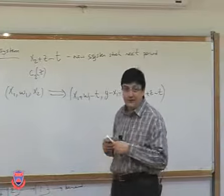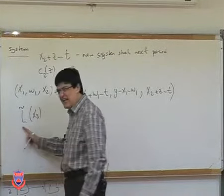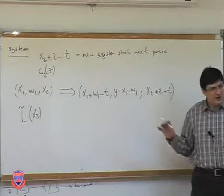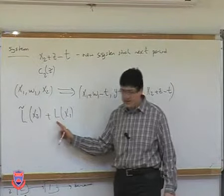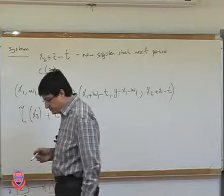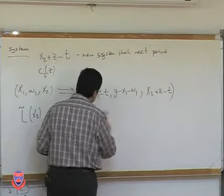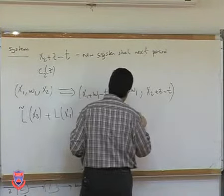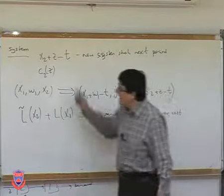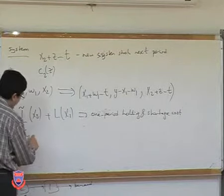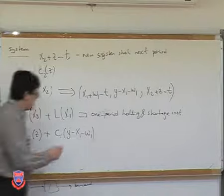Now let us write the L functions. I am going to have L-twiddle of X2. This L function doesn't contain a regular backorder cost — it only contains holding cost — which is why I differentiated it from the regular L. So L-twiddle is the one-period holding and shortage cost for the sum of both installations.